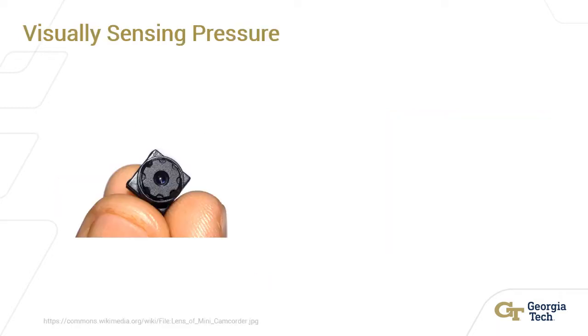Instead of using physical contact sensors, we investigate using cameras to sense pressure. In comparison to physical pressure sensors, cameras are robust, low cost, and can observe a large area of the robot.